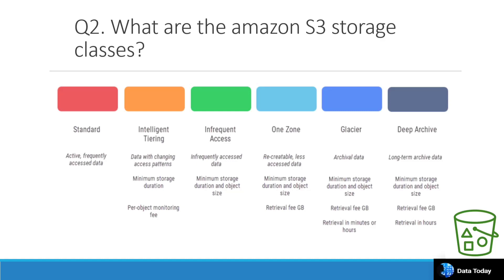Another class is Infrequent Access — if you are accessing data very infrequently, you can keep it there. There is a minimum storage duration and object size requirement. We also have One Zone Infrequent Access for recreatable data, which has a retrieval fee per GB. Then there are Glacier and Deep Archive for long-term storage.